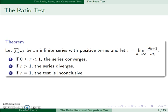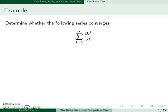So let's do a couple of examples. We want to see if this converges. So the first step is to find r. And r looks at the a sub k plus 1 term. So we have 10 to the k plus 1 over k plus 1 factorial, and then we divide by a sub k, which is 10 to the k over k factorial.